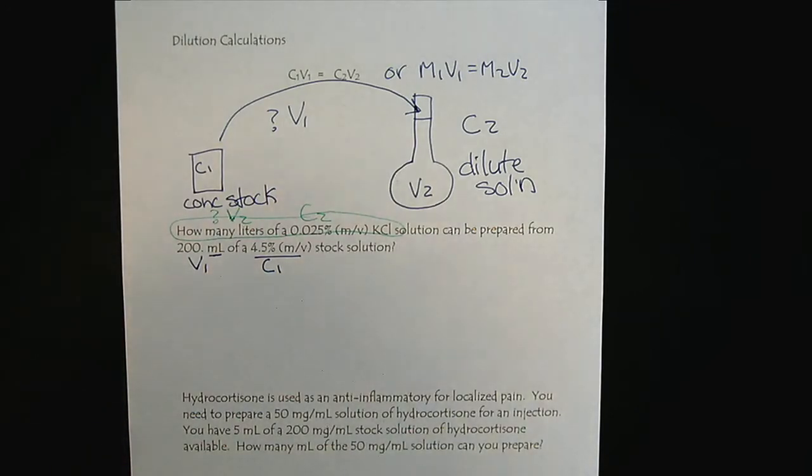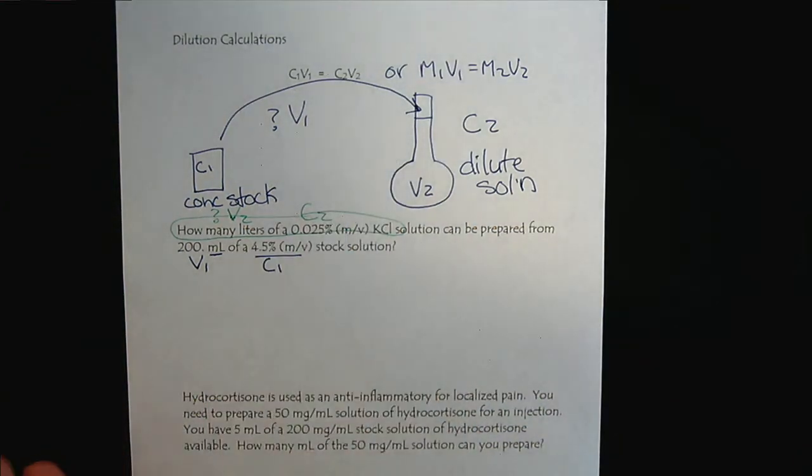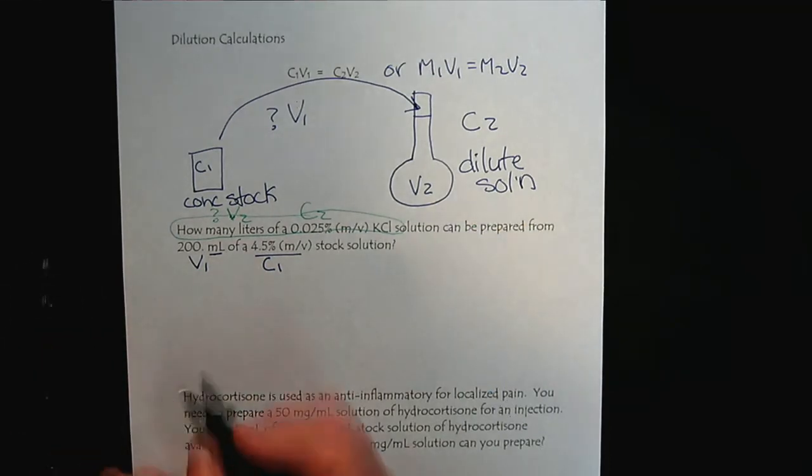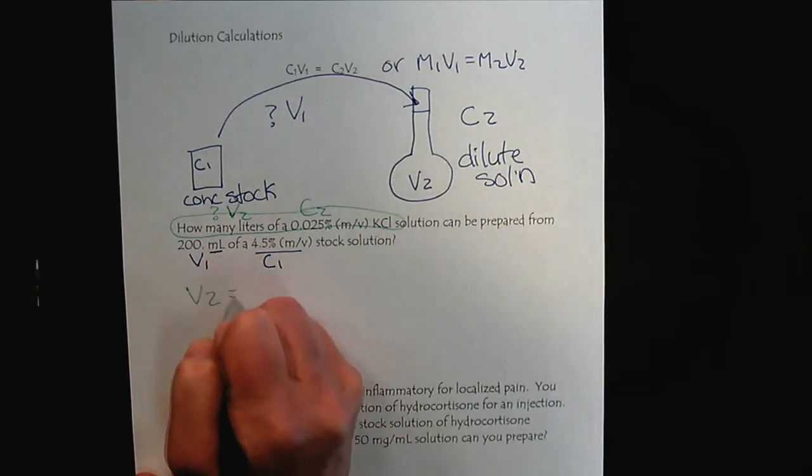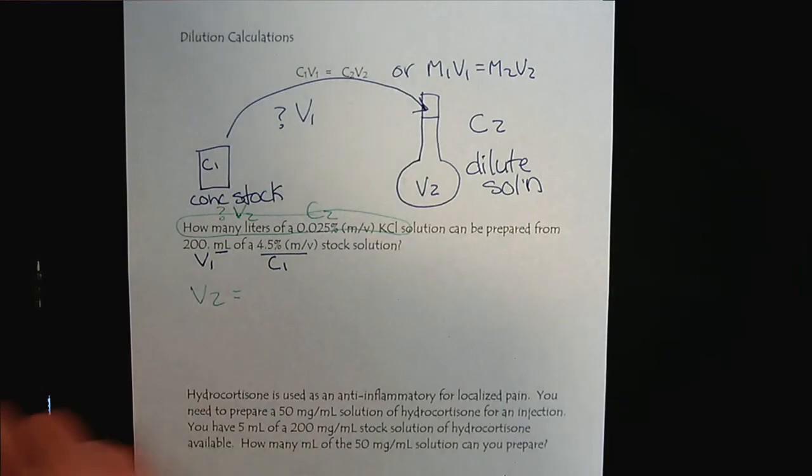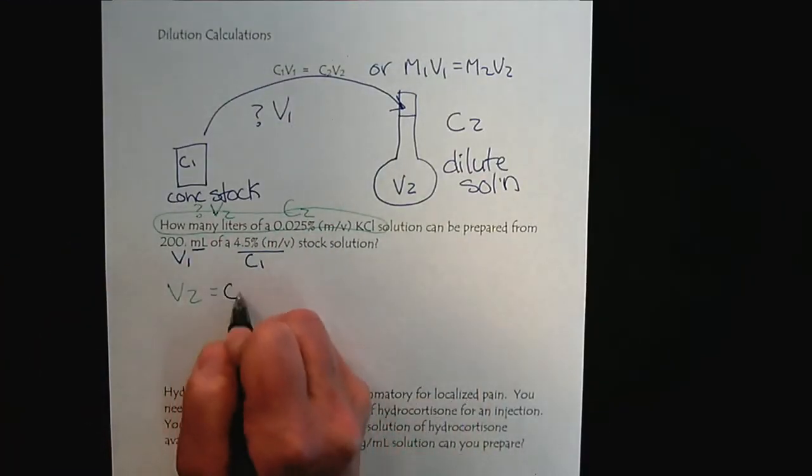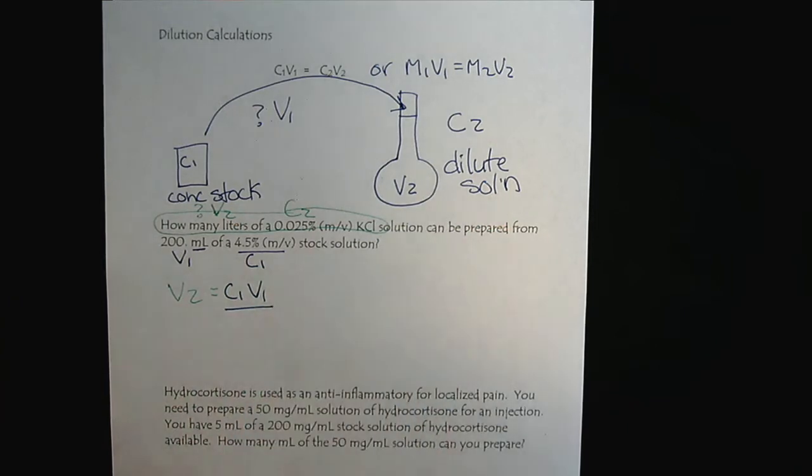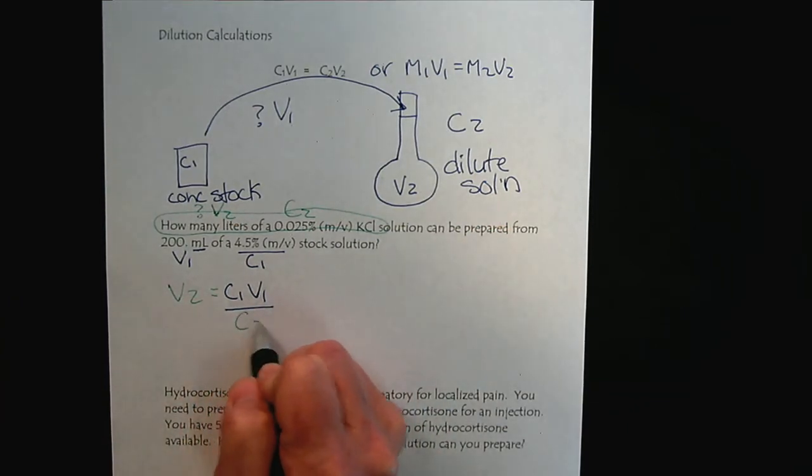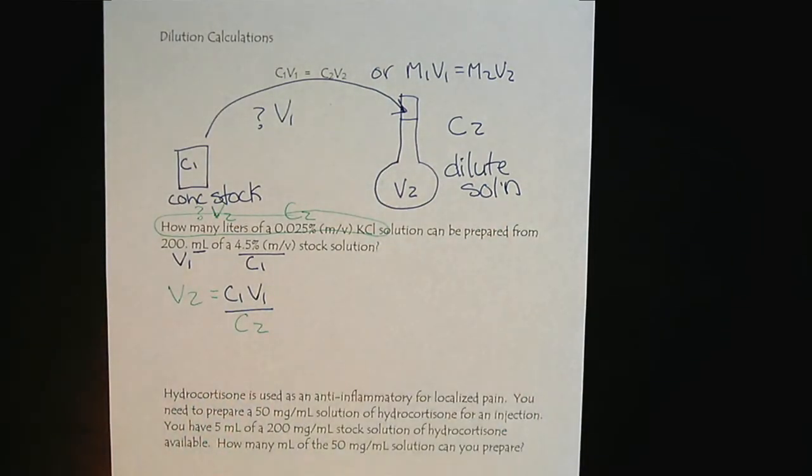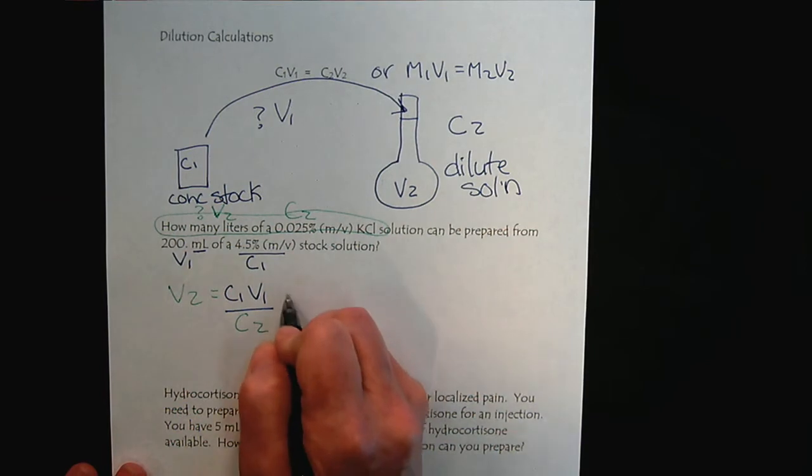We're trying to solve for V2. When we solve this expression for V2, V2 is going to be C1 V1 divided by C2. At this point, it becomes what we call plug and chug. We've identified all the variables, and we've solved the algebraic expression. Now, we can complete the calculation.